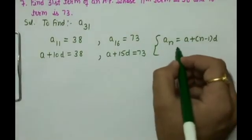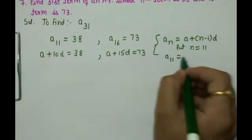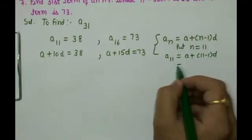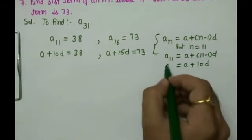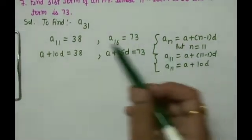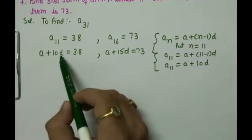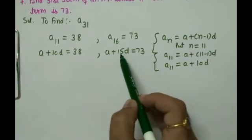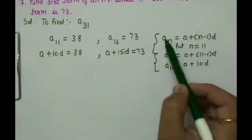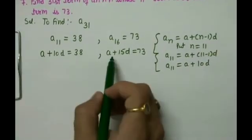To verify: put n equal to 11 in the formula — a plus 11 minus 1 into d equals a plus 10d. So we can directly write a plus 10d equals 38 as equation one, and a plus 15d equals 73 as equation two. In exams, directly use this shorthand whenever a_11 or a_16 is given.